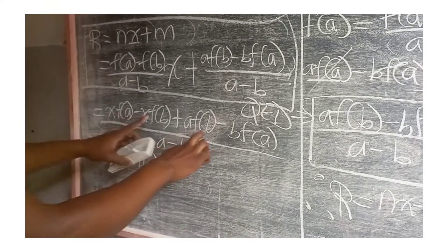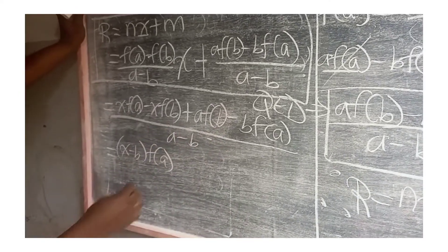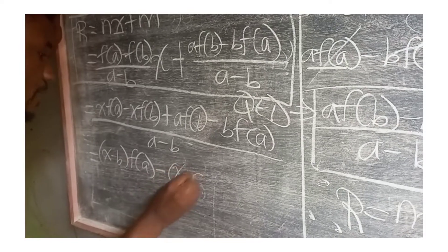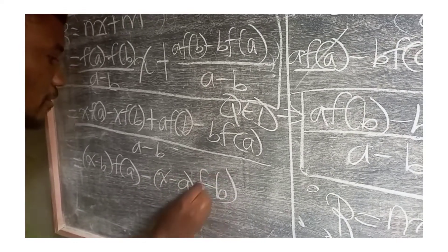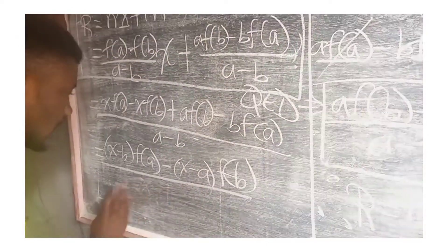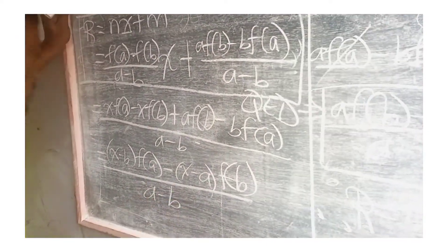And here we have f(b), f(b), factorizing out f(b), we're going to have -(x-a)·f(b), all that on, under a-b. So, you can equally express it this way, if you wish.